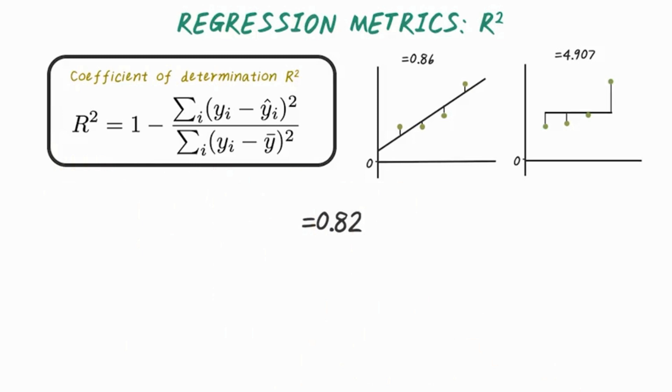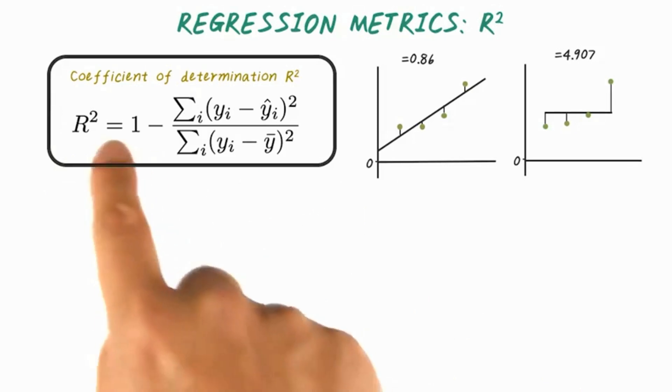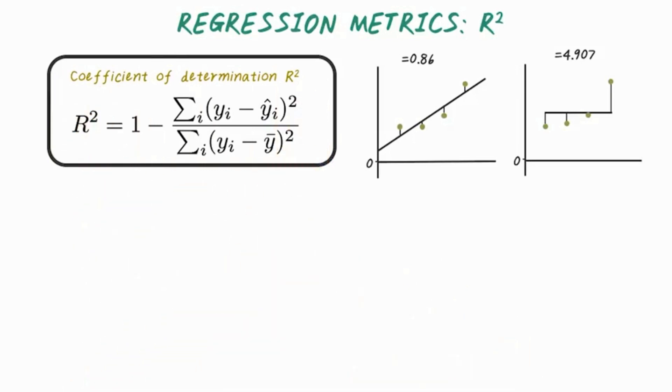It is important to notice that by this definition, it's possible to have negative values of R squared, which means the predictive model performed worse than a simple average over the original data.